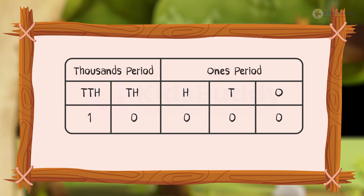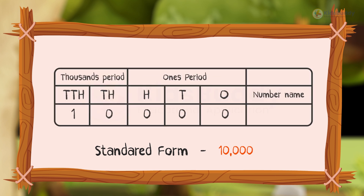When we write the number in the standard form, the number 10,000 is written as 1,0,0,0,0 with a comma separating the periods. Its number name is ten thousand.